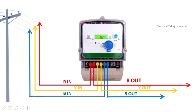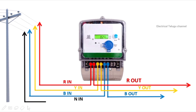Okay friends, these three wires are red, yellow, and blue. These three wires are phase wires. Now this is N-in — N-in means neutral wire. We can use neutral service wire for N-in. Okay friends, next is N-out. N-out means neutral wire. We can connect neutral wire to the switchboard.